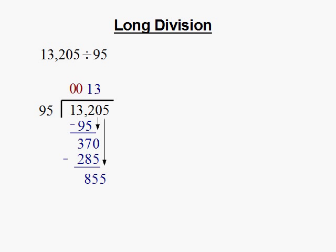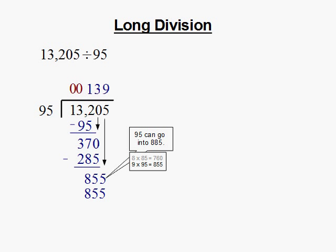We then continue to repeat the previous process. The last number we get is our remainder. Since it is 0, we don't have a remainder. Therefore, our result is 139.